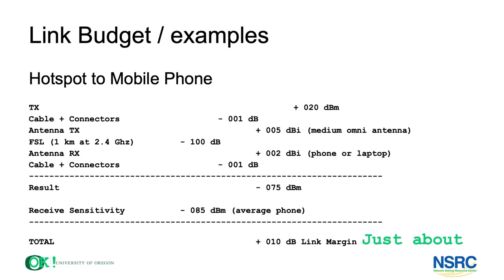Some link budget examples: for a hotspot, output power 20 dBm, a medium-size relatively weak antenna at 5 dBi on the sending side, and on the receiver just a small built-in antenna at 2 dBi. Over a distance of one kilometer, you get a connection that just about works — it's just enough to get through, not a lot of margin left, but it would probably work.